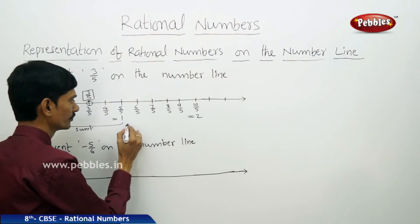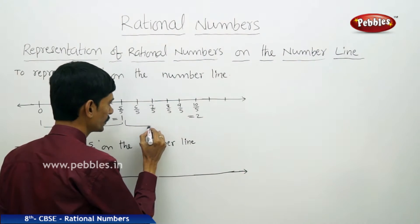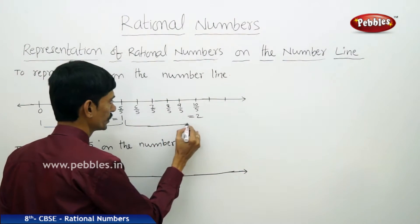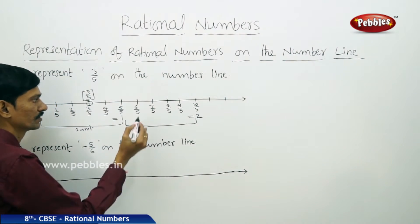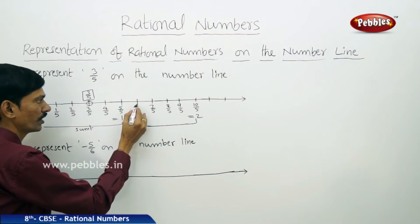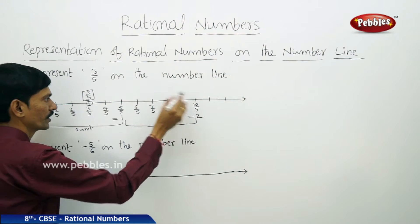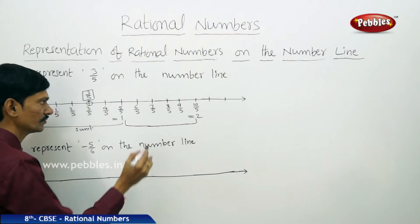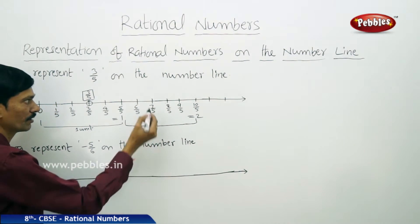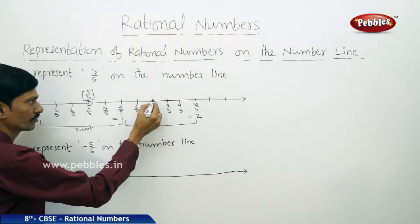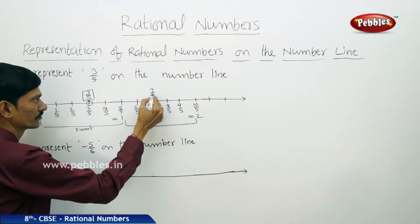From 1 to 2 is the second unit, also divided into 5 equal parts — 1, 2, 3, 4, 5. So if you want to represent 7 by 5 on the number line, this is 7 by 5.